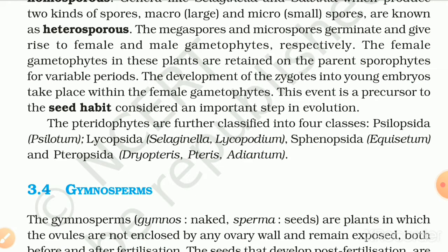The pteridophytes are further classified into four classes: Psilopsida (e.g. Psilotum), Lycopsida (e.g. Selaginella, Lycopodium), Sphenopsida (e.g. Equisetum) and Pteropsida (e.g. Dryopteris, Pteris and Adiantum).